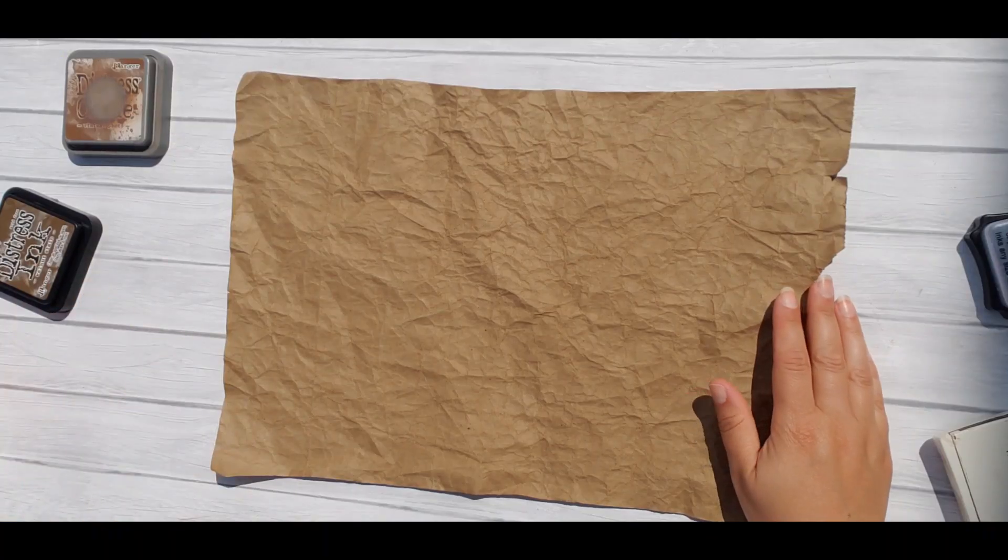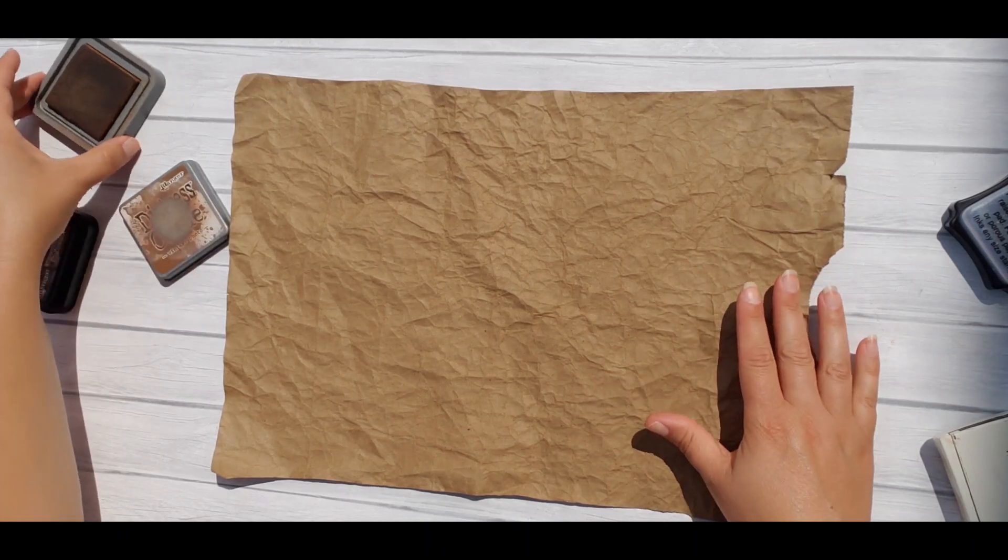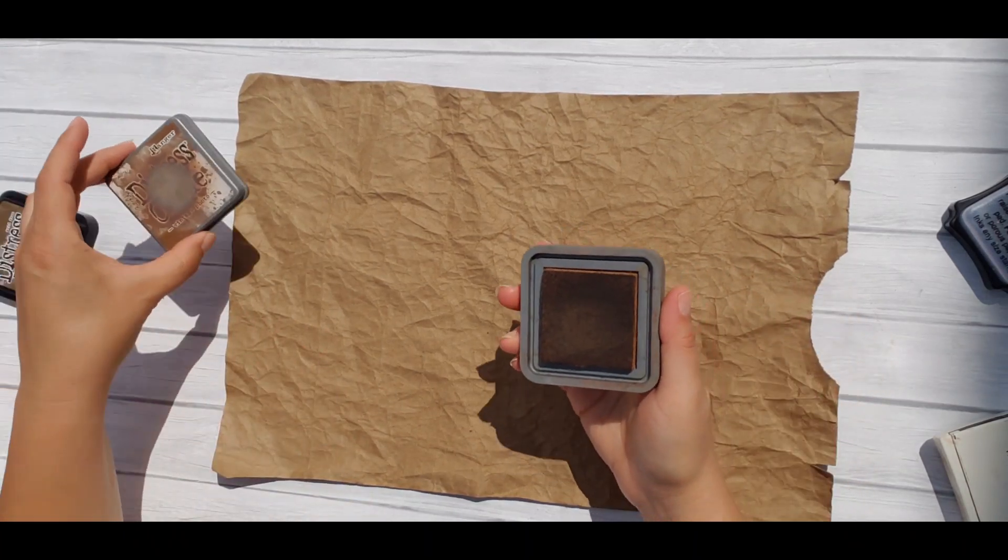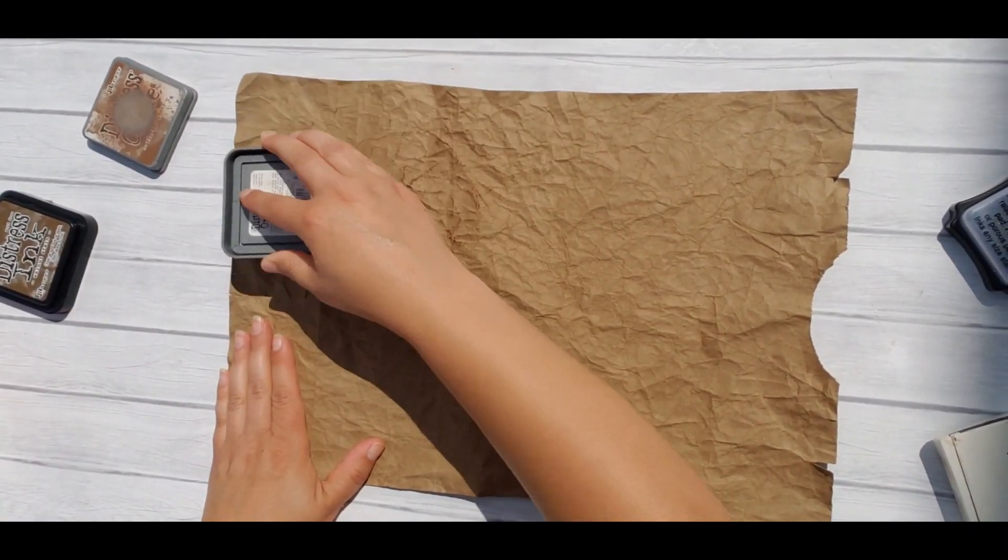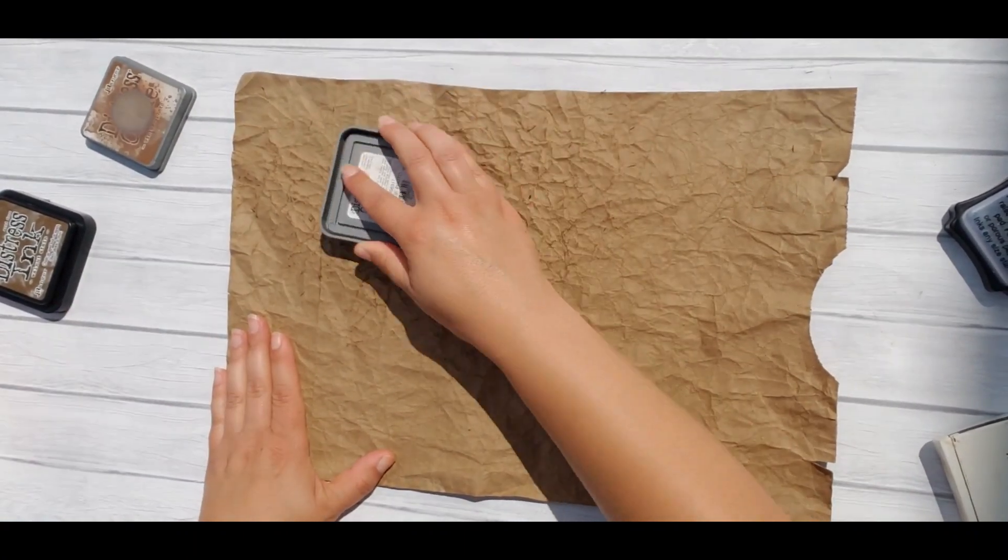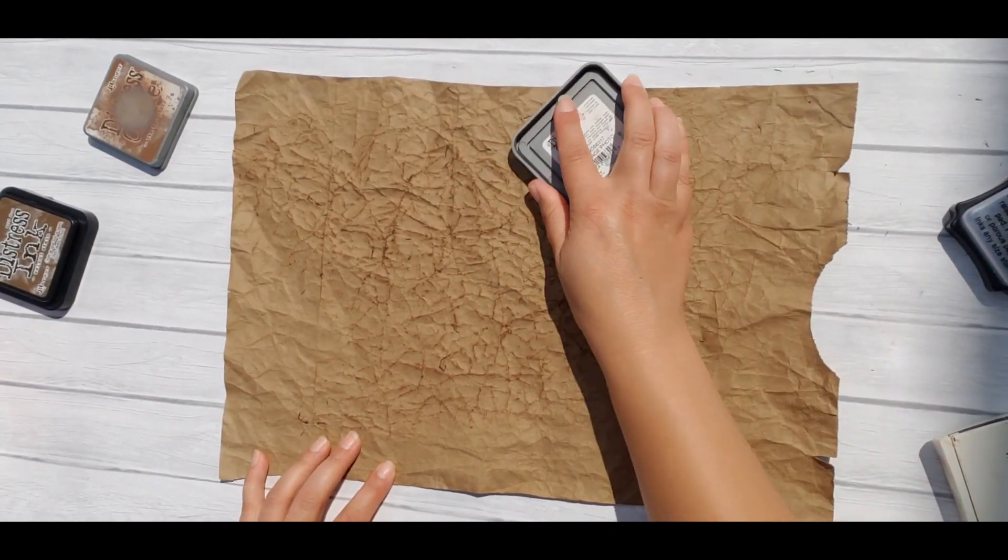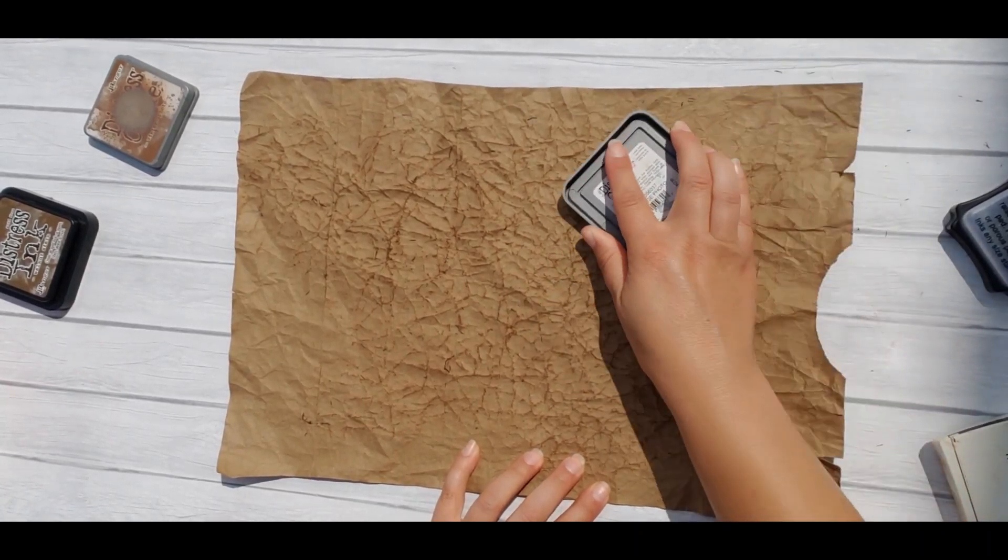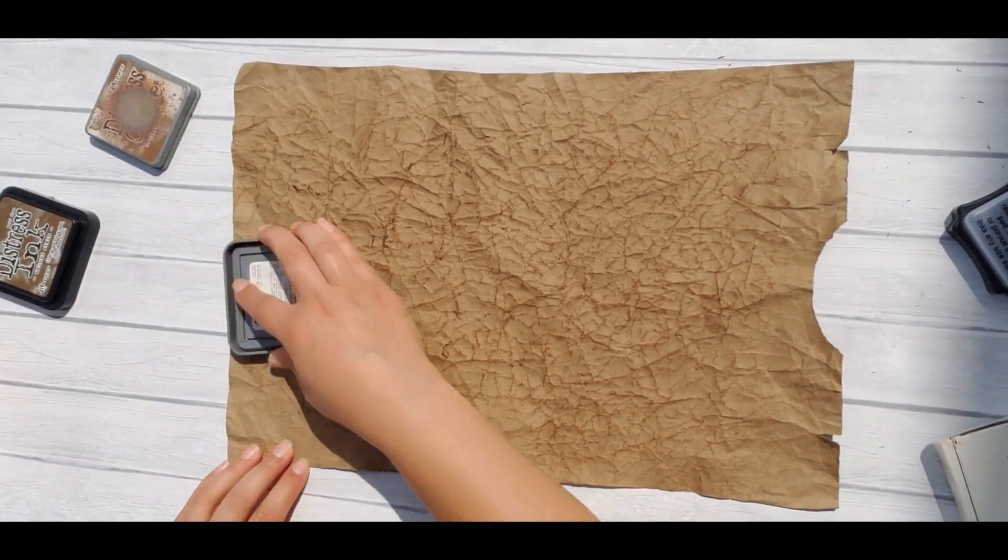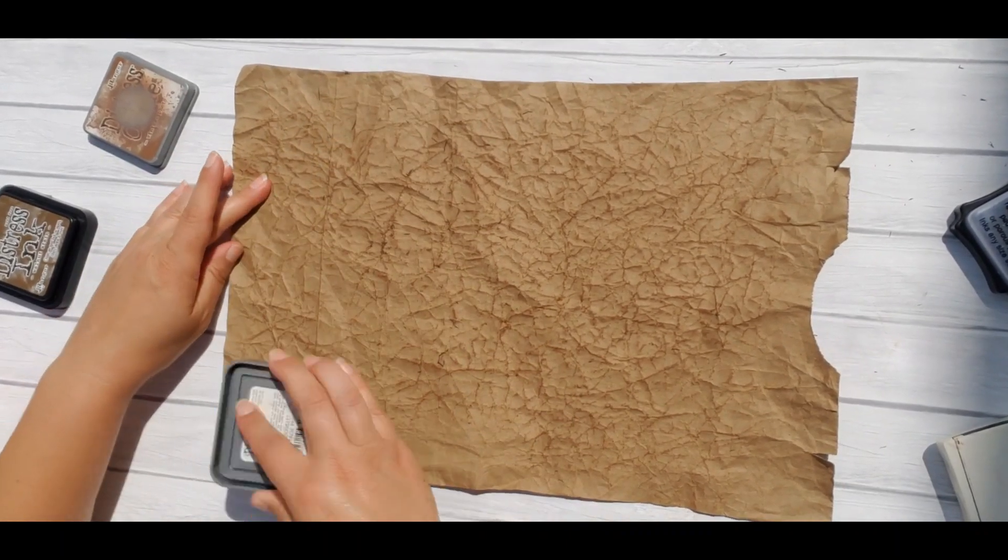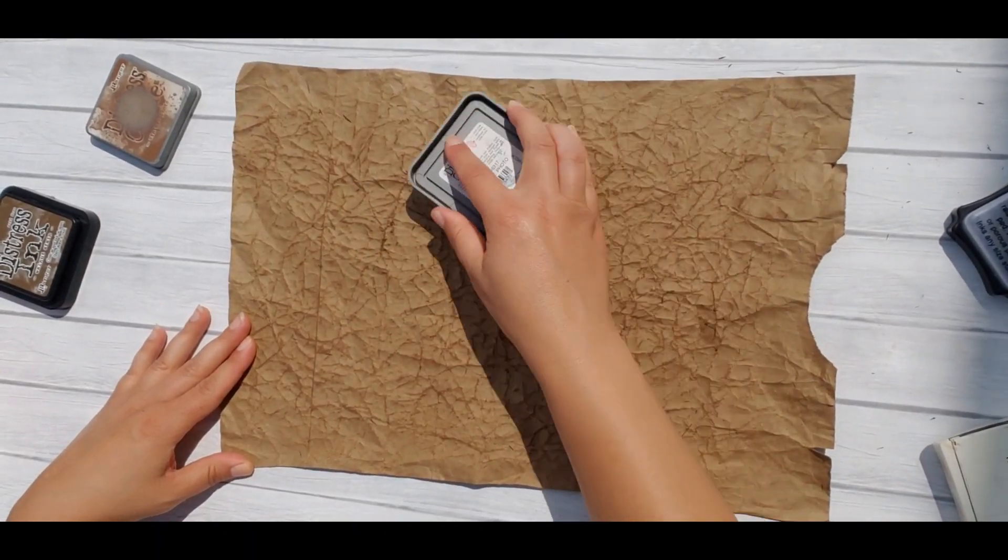Now I'm going to start adding some color to our leather. I'm going to start with this Distress Oxide in Vintage Photo. And I'm lightly running over the paper. Just like that. We are going to start lightly and then we can always add more color. It's much easier to make your paper darker than to make it lighter.